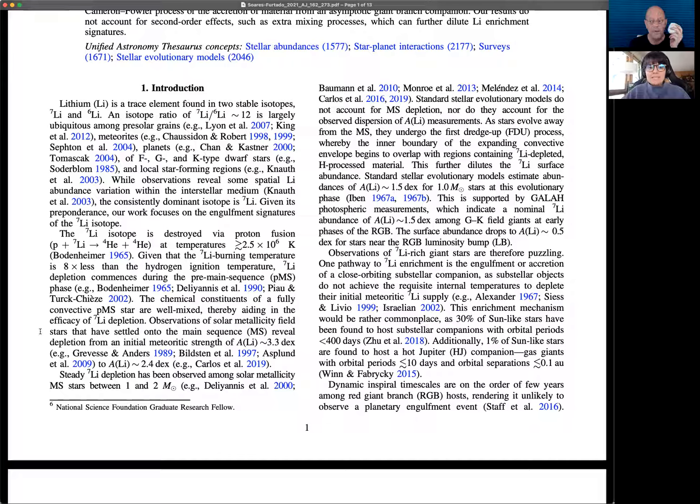One of the lowest hanging fruits in terms of abundance signatures to look for is lithium seven. The reason is because it is a really fragile element that is destroyed at about two and a half million degrees Kelvin. The intro talks a lot about why lithium is so special. Stars are contracting onto the main sequence and they're purely convective, these central temperatures exceed that lithium burning temperature.